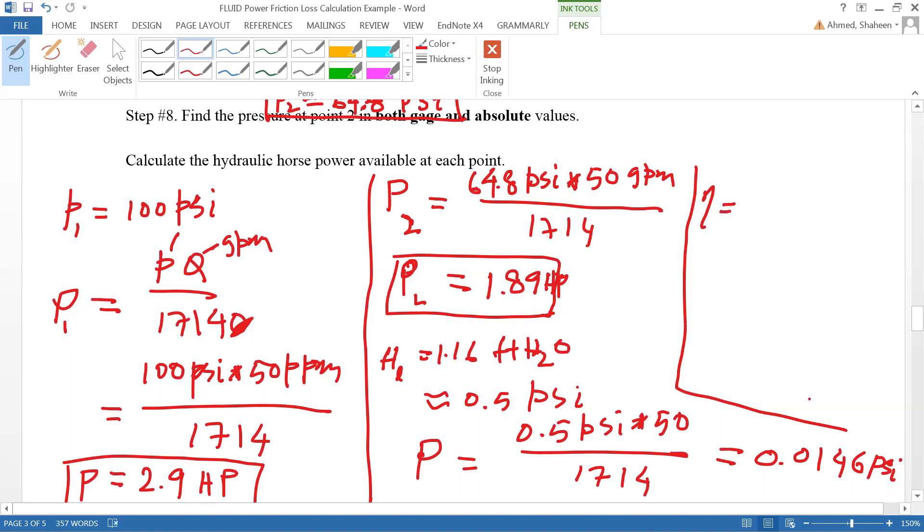Only this loss we have to account for. So then it will be 2.9 horsepower minus the loss, 0.0146, divided by the 2.9. So that would be about almost 99.95 percent efficient, I think 99.5 percent. Sorry, 99.5 percent efficient system.